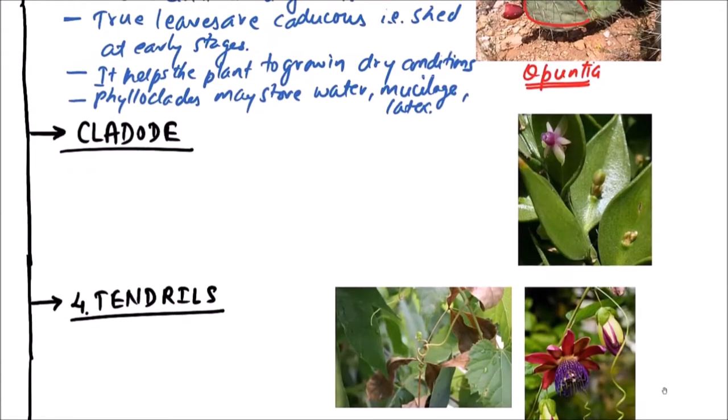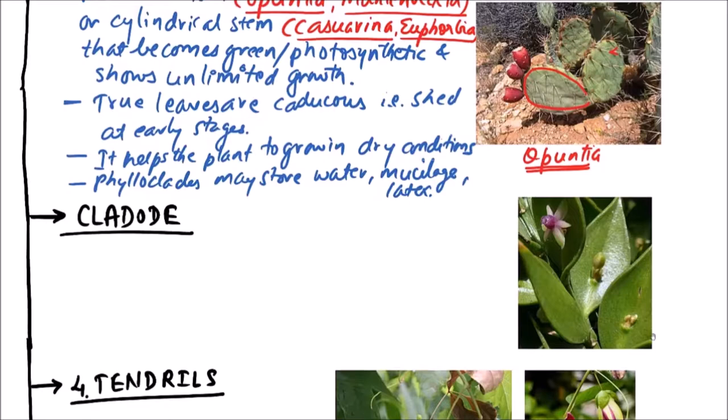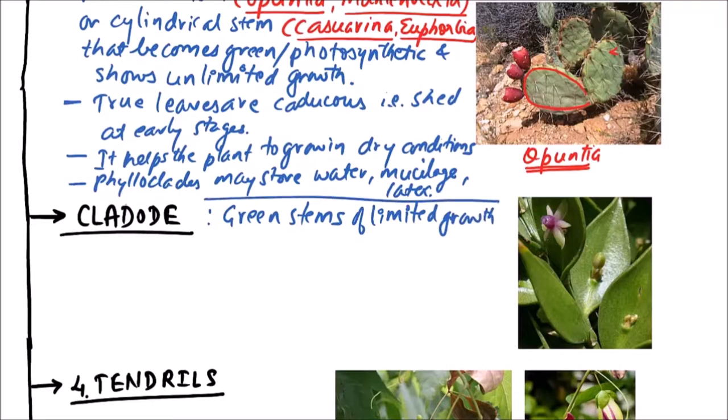Now the next example or next type of modification is cladode. Cladodes are basically green stems of limited growth. These are usually one internode long.